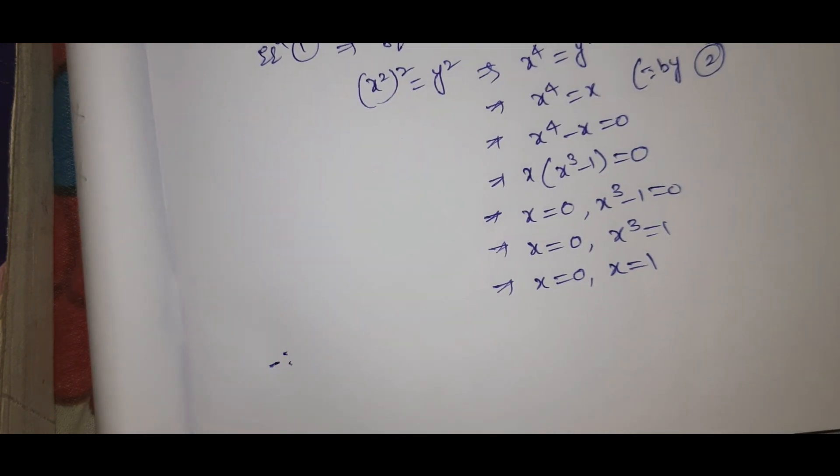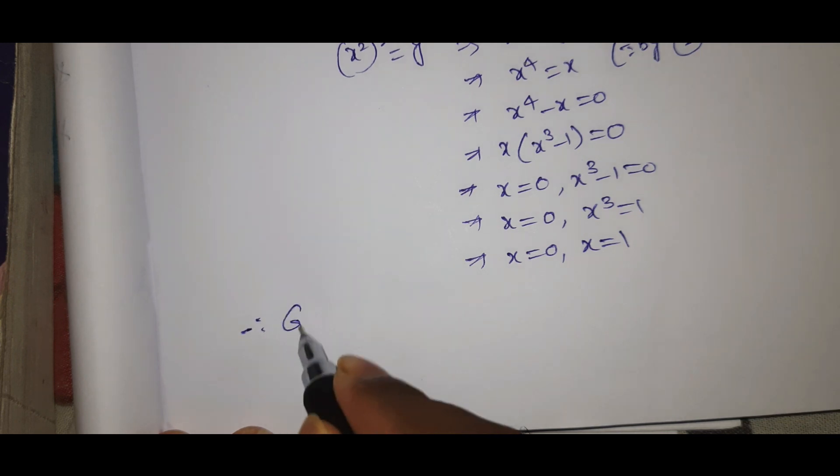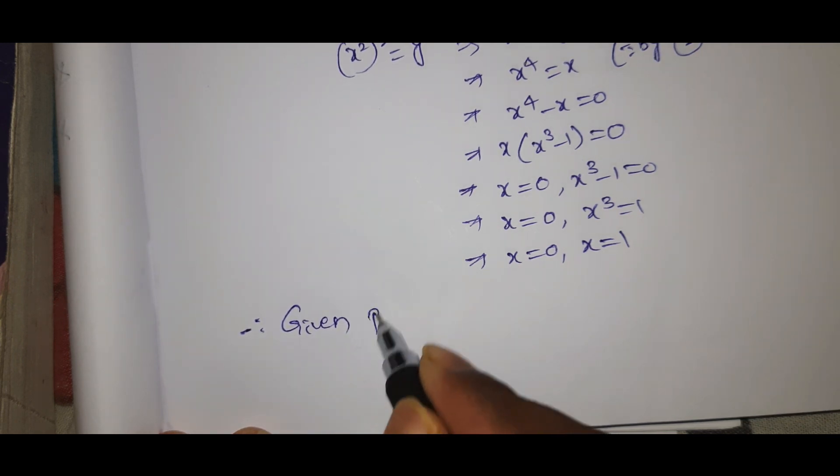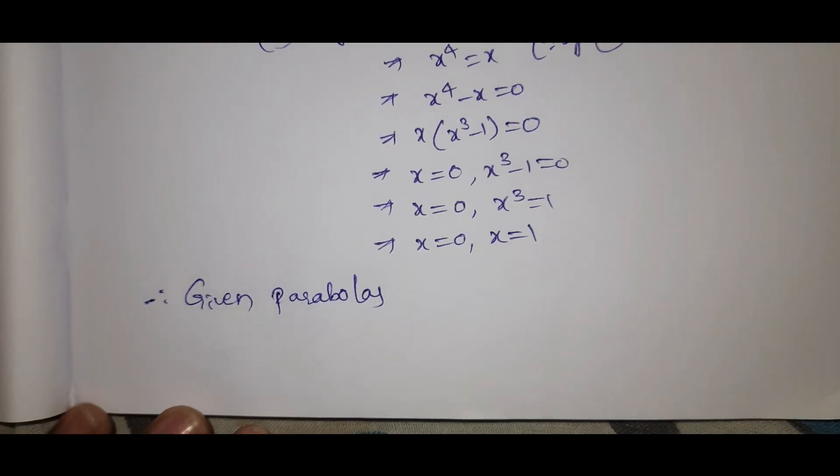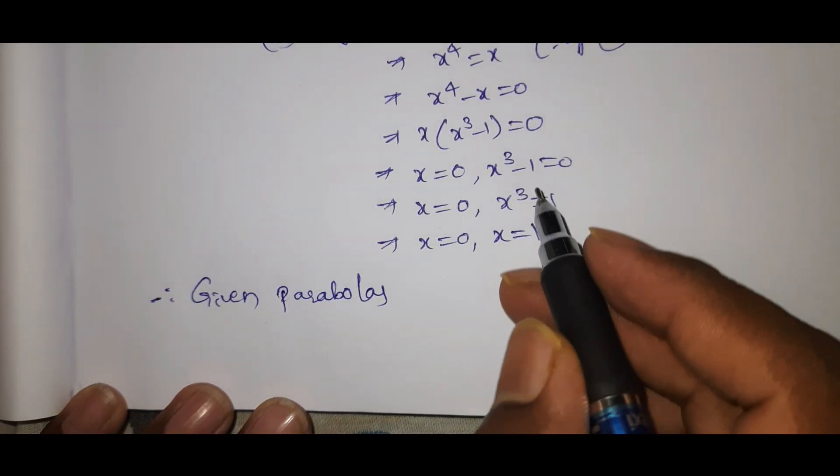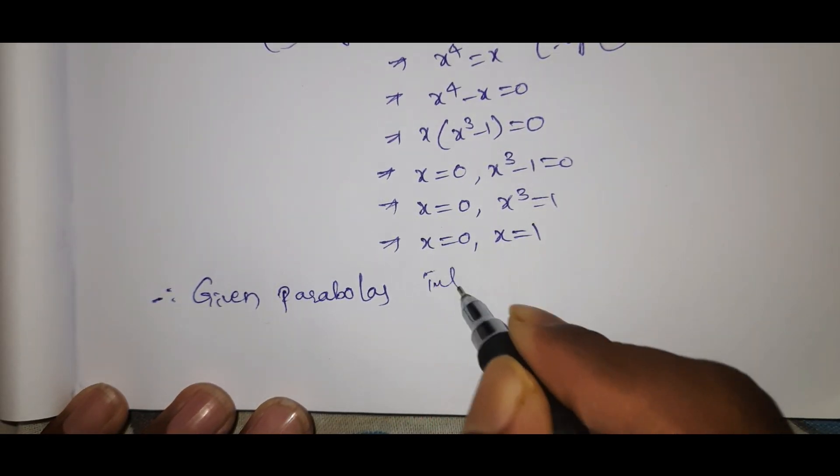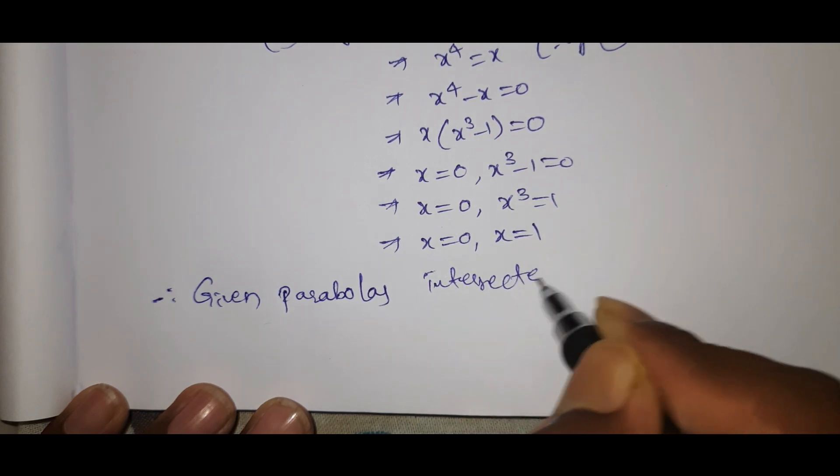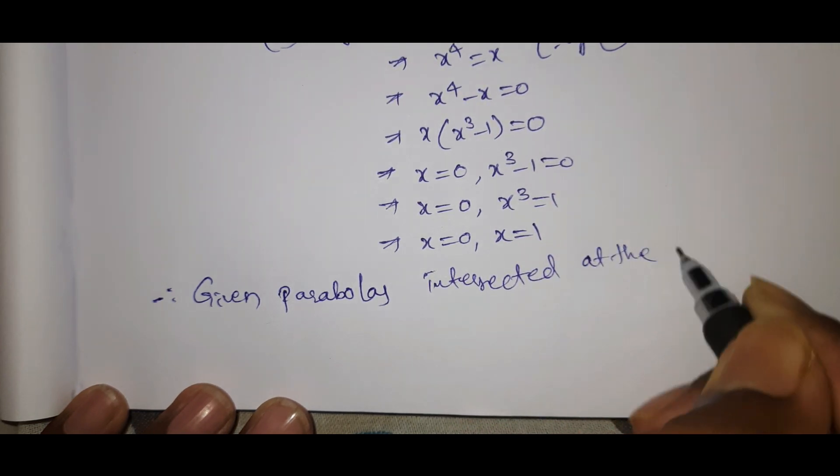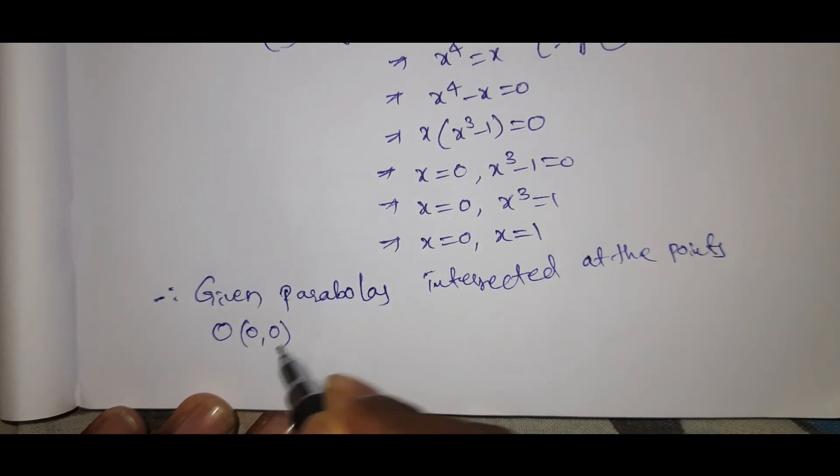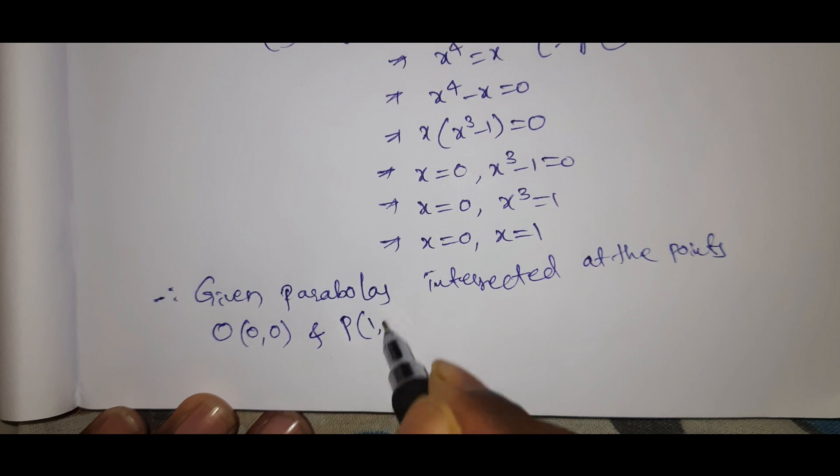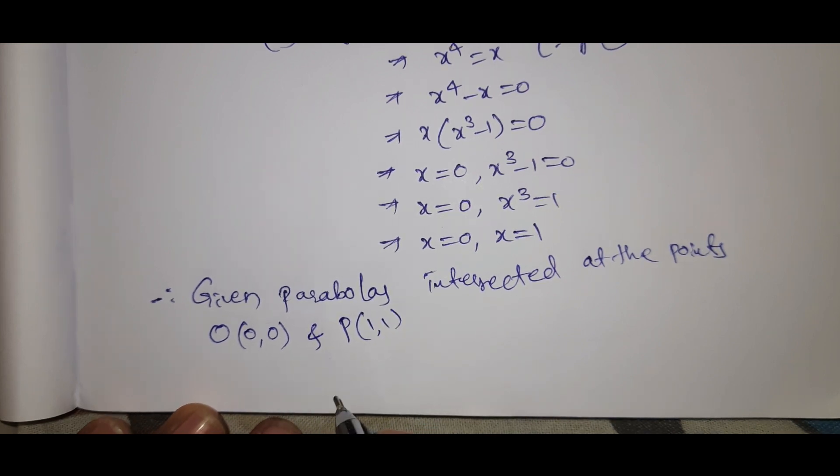Therefore, the given parabolas intersect at the points (0, 0) and (1, 1).